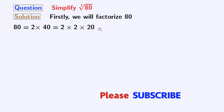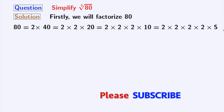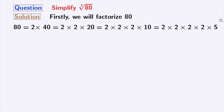We all know that 20 is divisible by 2, and this is equal to 2 times 10. And 10 is equal to 2 times 5. Now, all these factors are prime factors, so we cannot factorize further. Finally, we get 80 is equal to 2 times 2 times 2 times 2 times 5.